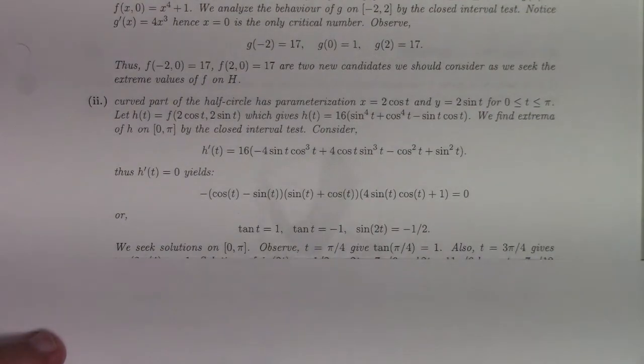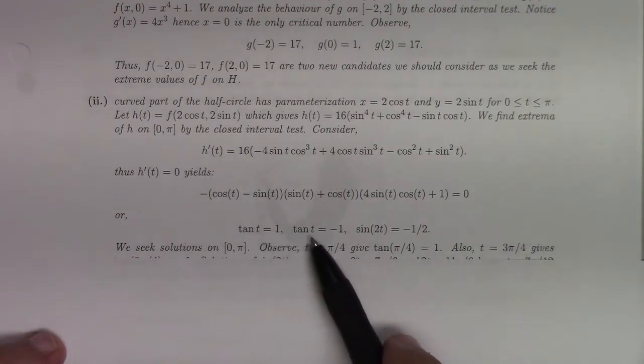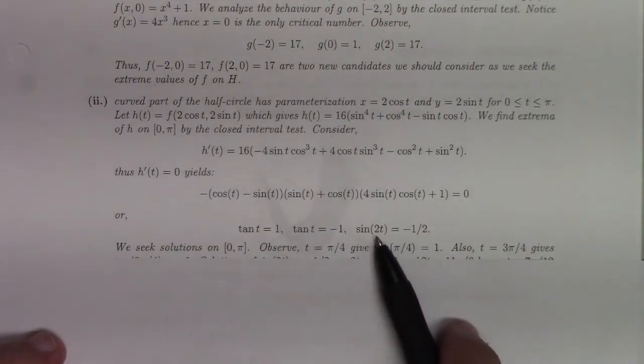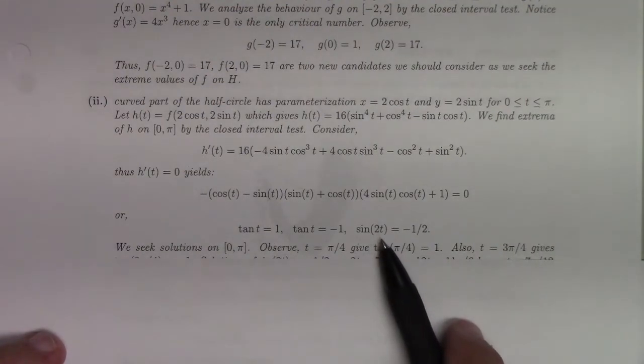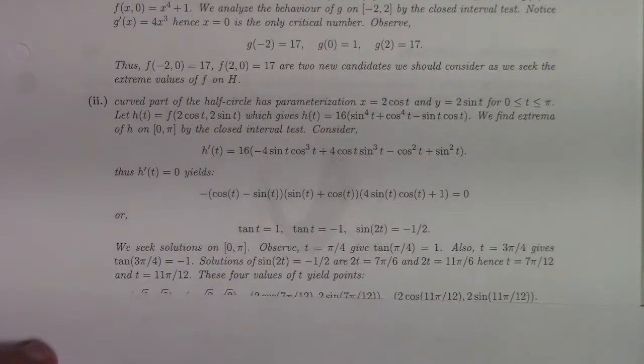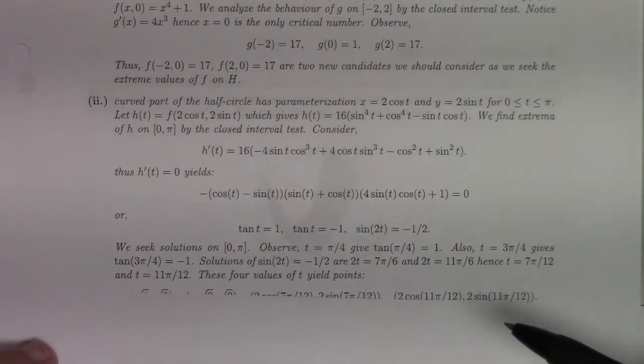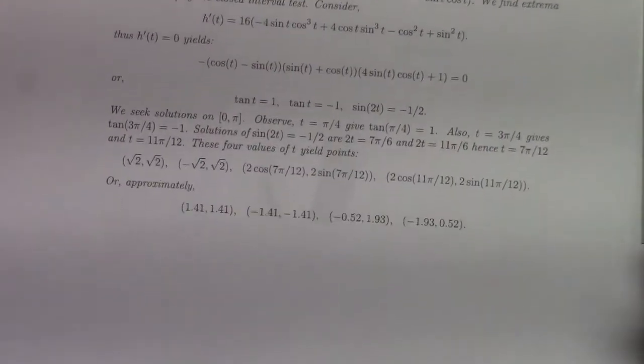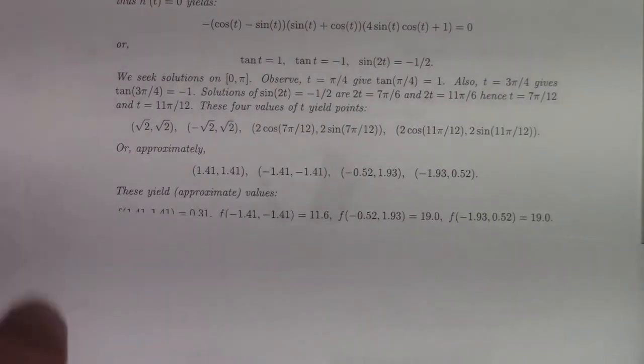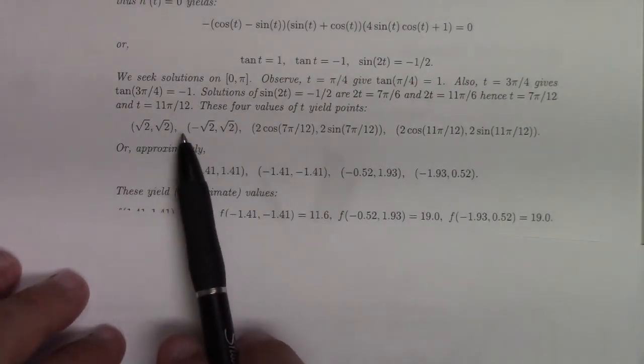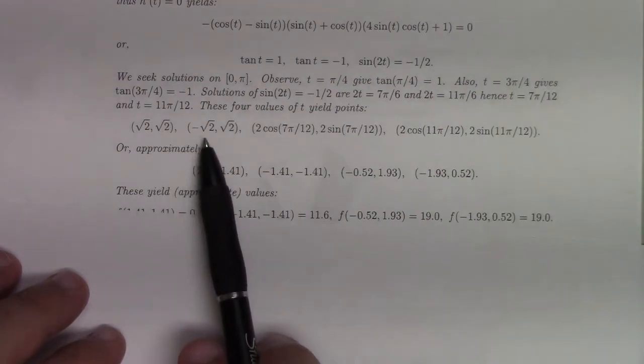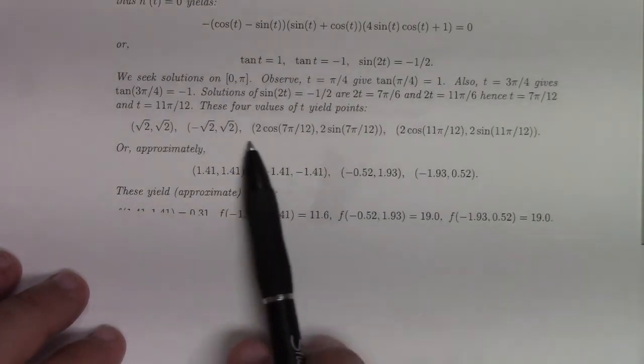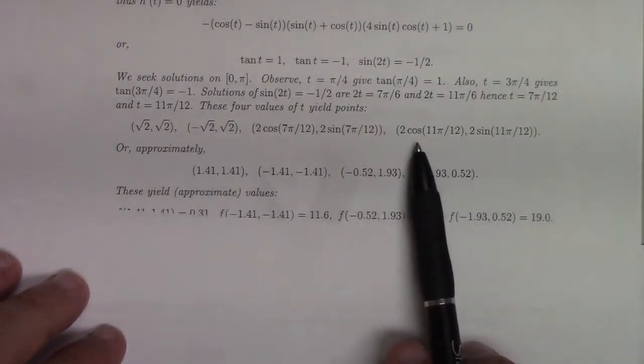We either need tangent t is 1, tangent t is minus 1, or apparently 2t is like minus pi over 6, or 7 pi over 6 if you like. Working through this pesky trigonometry, I get 4 times, which are potential extremal values for h, and it gives me these four points on the half circle.